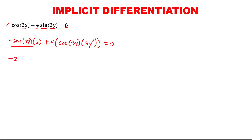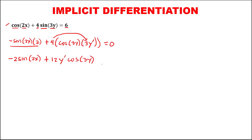Then to simplify, so this is equal to negative 2 sine 2x, then plus — multiply 4 and 3 — so this is 12y prime, then cosine 3y equals 0. Then to solve for y prime, so transpose this equation to the other side.